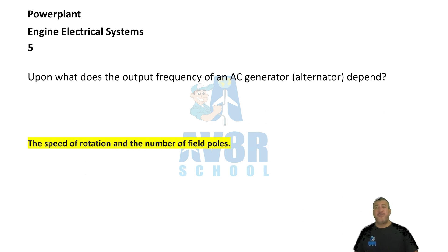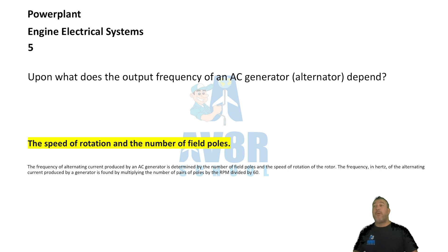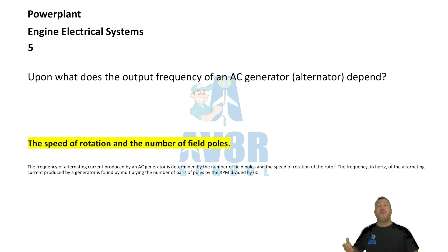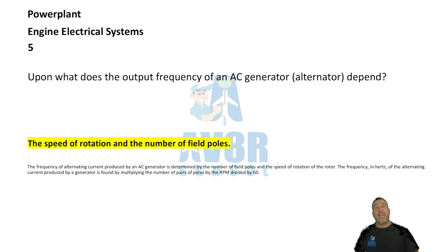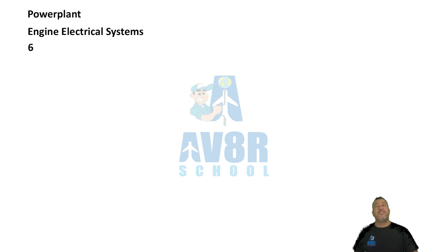Number 5. Upon what does the output frequency of the AC generator, also known as the alternator, depend? The speed of rotation and the number of field poles.